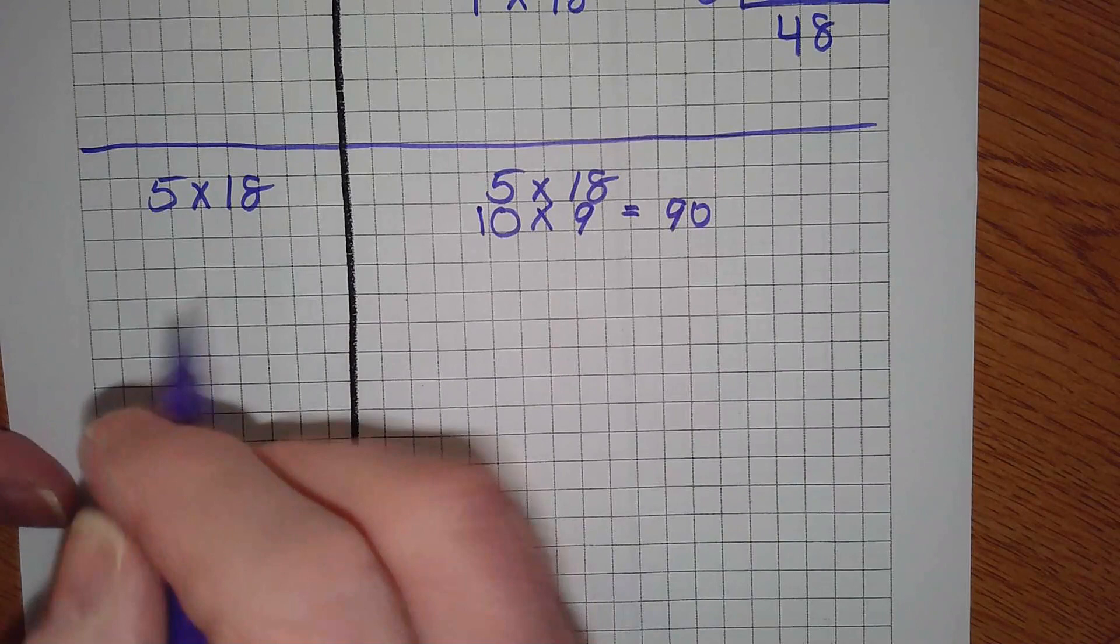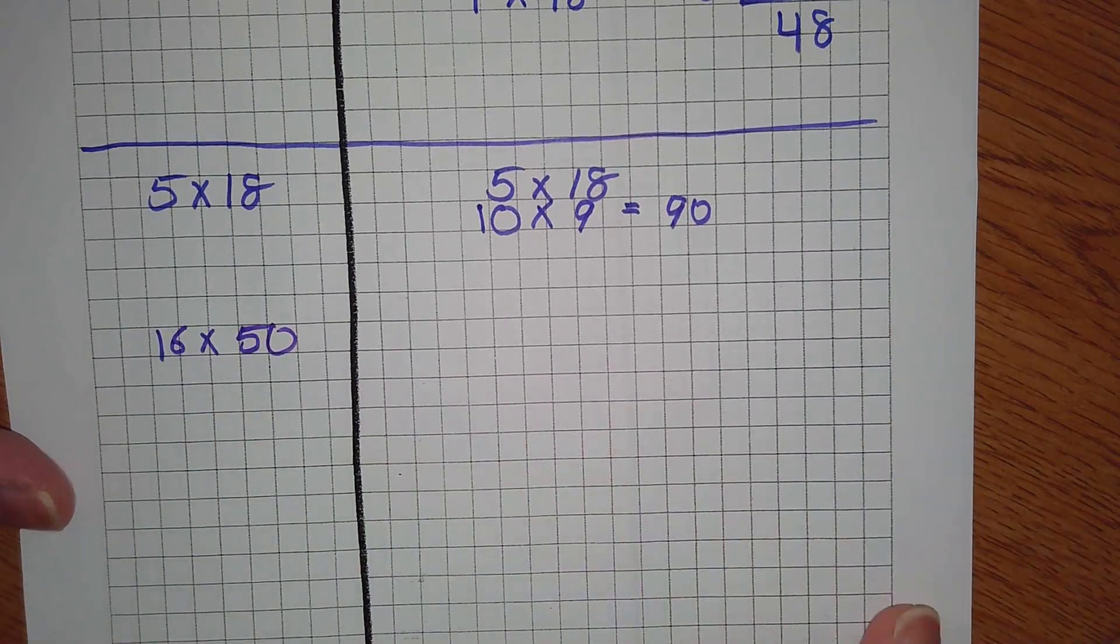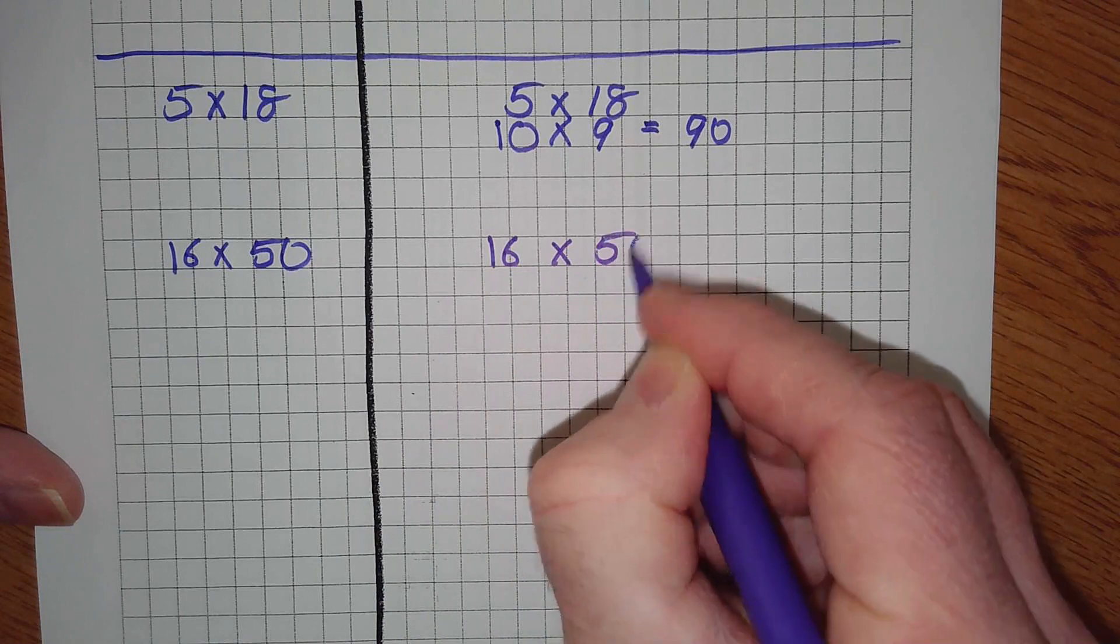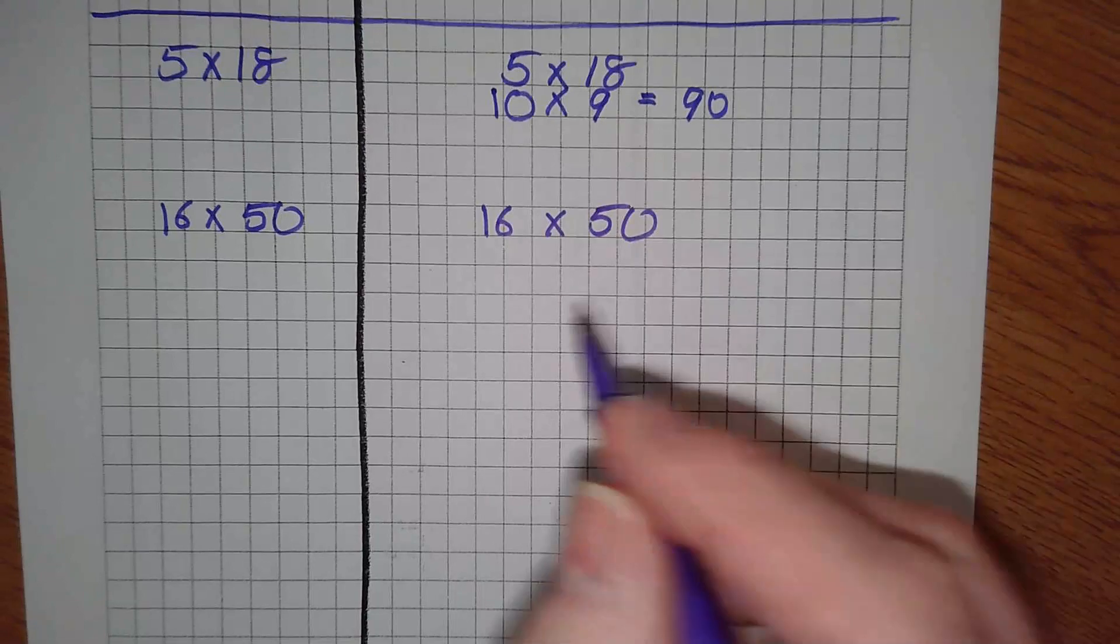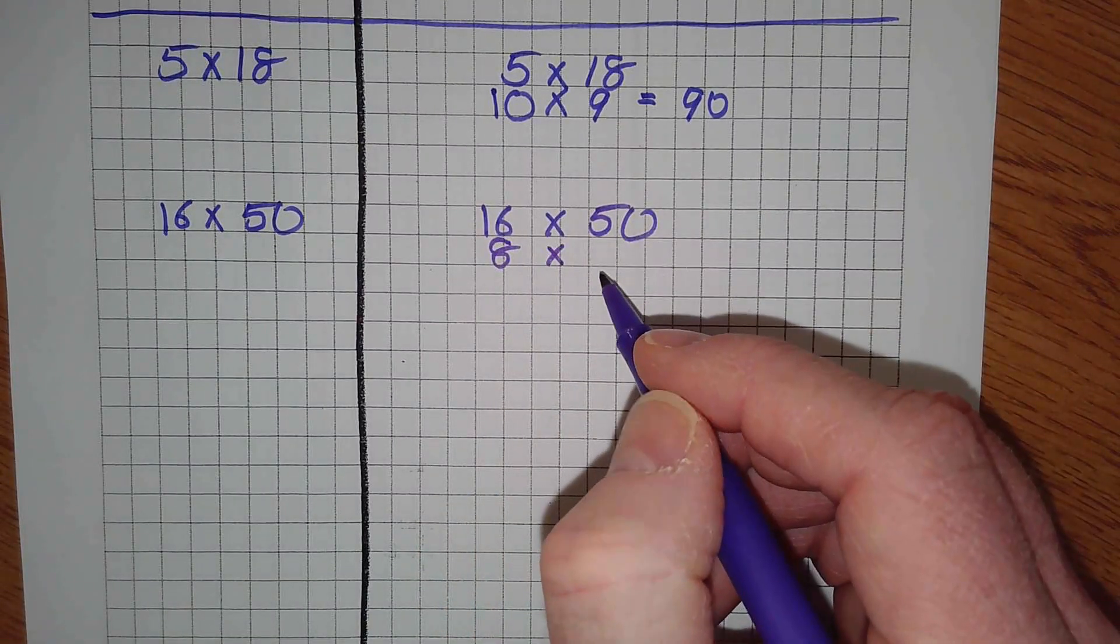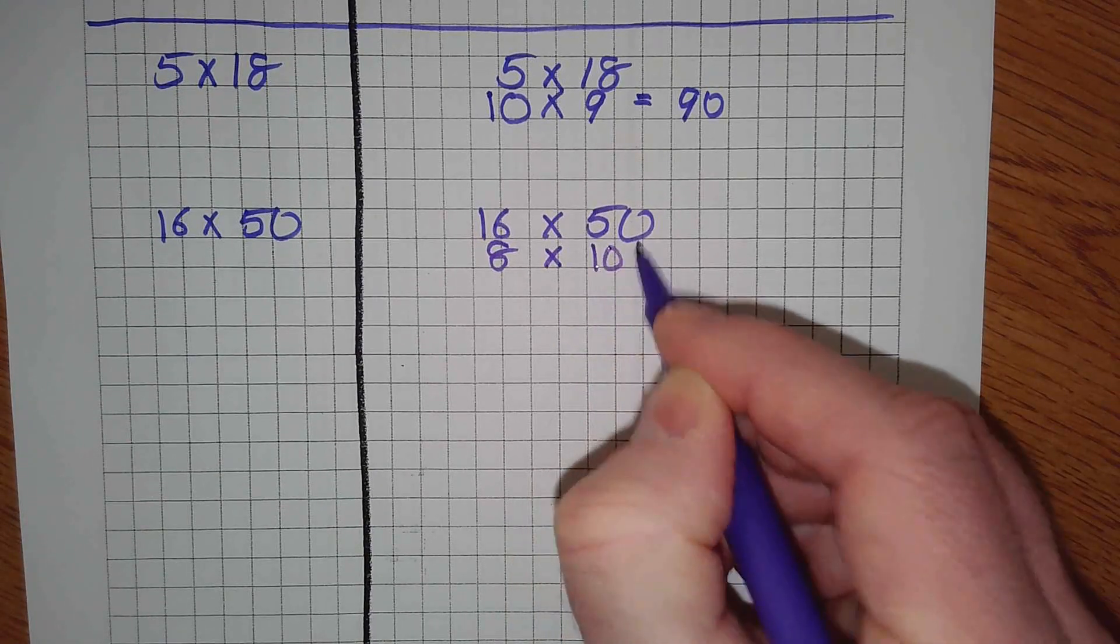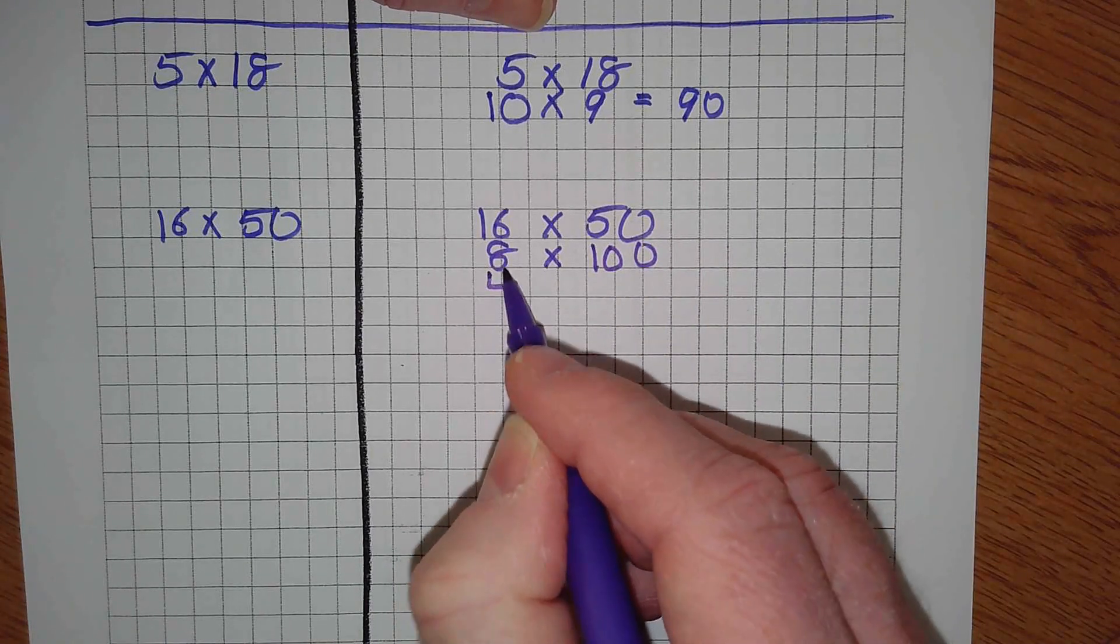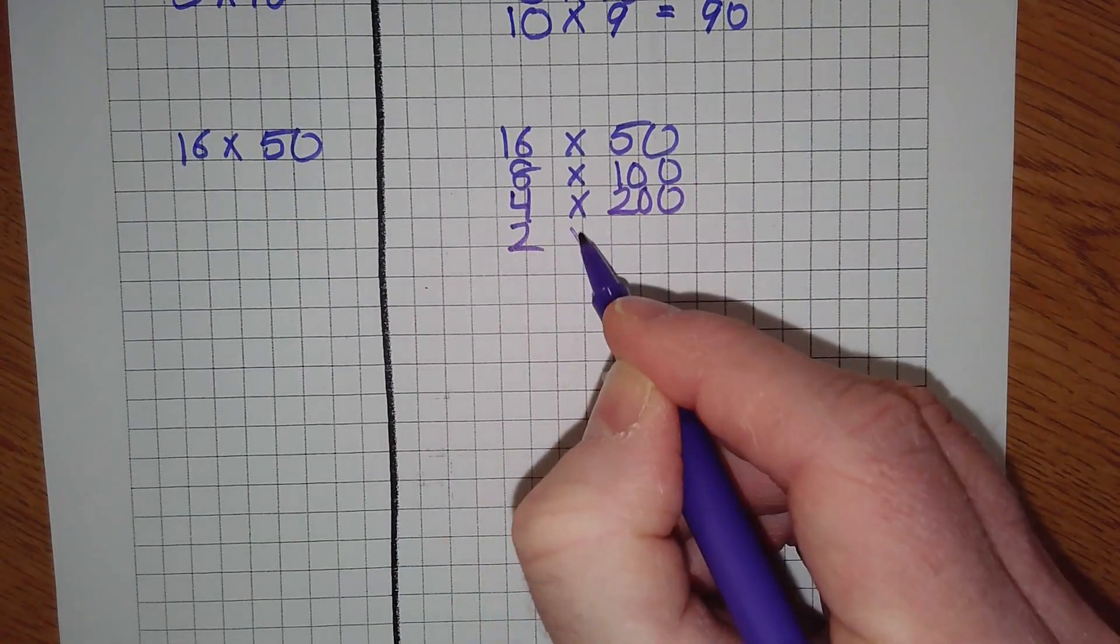Zach just volunteered for another one. Go ahead, Zach. 16 times 50. Follow along, folks. I'm going to half 16 to get 8, and then I'm going to double 50 into 100. Then I'm going to half 8 into 4, then double 100 into 200. And then I'm going to half 4 into 2, and 200 into 400.